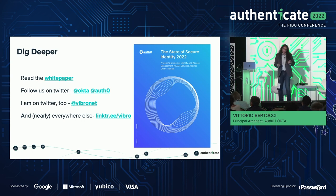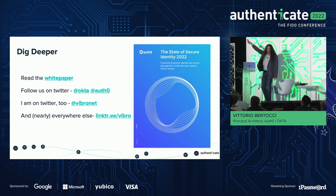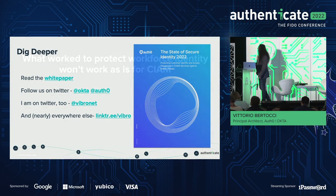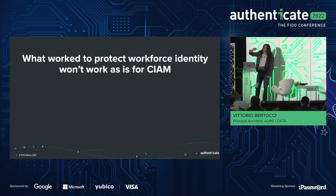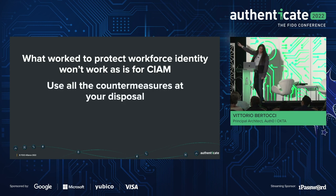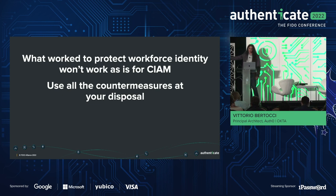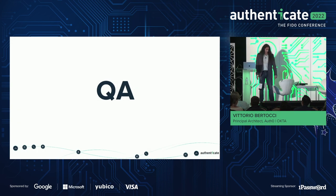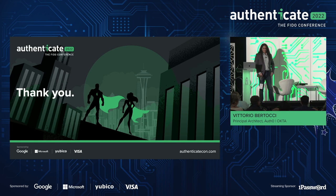If you want to dig deeper, there is a white paper — I highly recommend you download it. We are on Twitter so you can hear about new white papers, and I'm on Twitter as well, more responsive there than on email because on Twitter you shame me publicly. In summary: workforce identity is not the same as CIAM, so you need to do something different. The best option is unphishable technologies. Unfortunately we've run out of time for Q&A, but thank you very much Vittorio — excellent presentation.